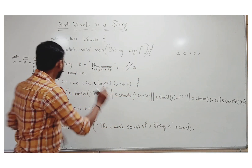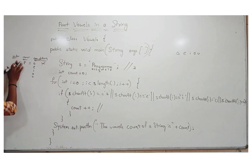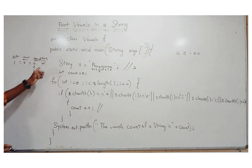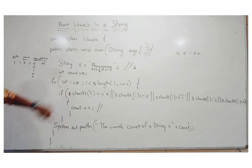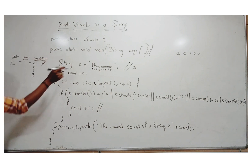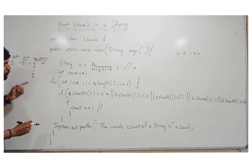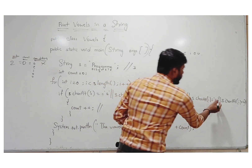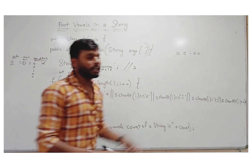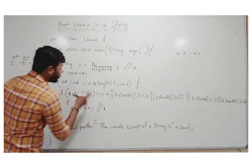At index zero, the character is 'p'. Is 'p' equal to a, e, i, o, or u? No — condition not satisfied, nothing happens. At index one, the character is 'r'. Again, condition not satisfied. At index two, the character is 'o'. Checking: o equals a? No. o equals e? No. But o equals o — condition satisfied! Count increments from zero to one.